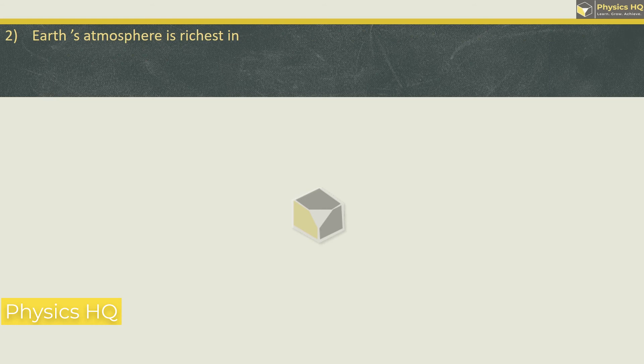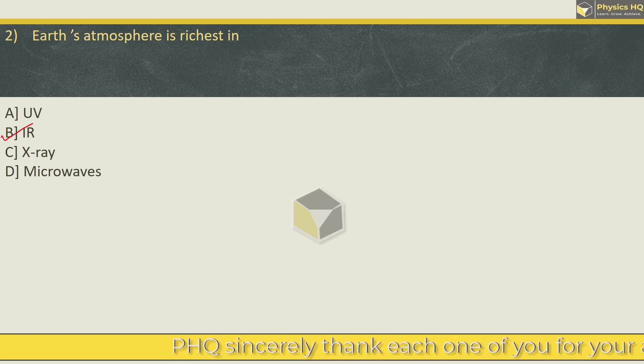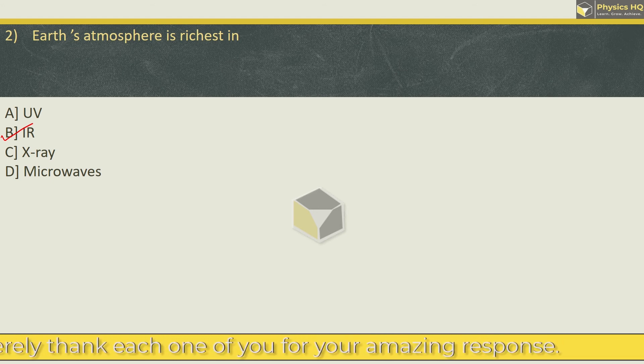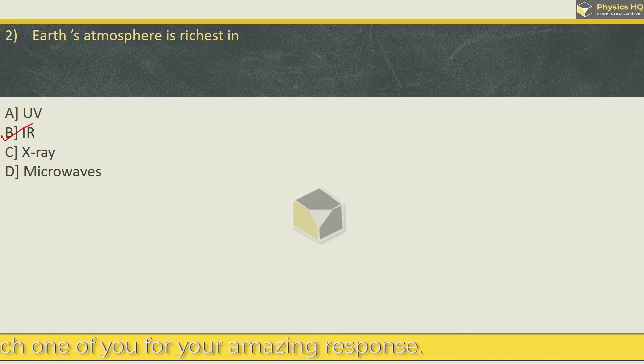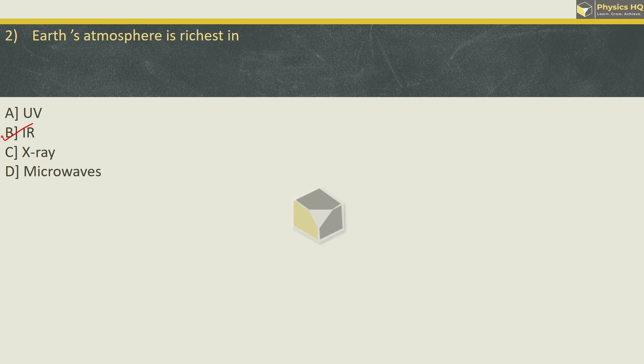Next, Earth's atmosphere is richest in UV, IR, x-ray, or microwaves. UV ultraviolet waves are already blocked by ozone layers. The one which are most abundant in the earth's atmosphere is the IR rays. So the correct option is option B. As we already discussed in the last MCQ, IR accounts for 60% of the solar radiations and along with that, hot bodies emit infrared rays. Therefore IR is the richest in the earth's atmosphere.